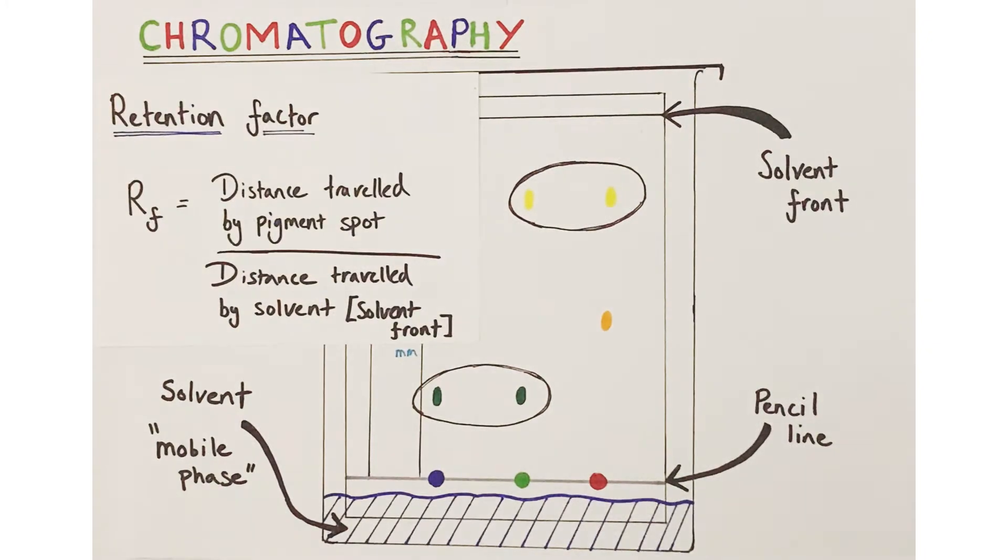In reality, sometimes it can be hard to tell if two pigments are actually at the same height as they can get quite smudged. Say, for example, my two yellow pigments here were actually quite smudged and spread out on the page. It could be hard to determine or distinguish if they were exactly at the same height. So a retention factor can be calculated to give a numerical value that can be compared to help with this. If two substances have the same RF value, then they are likely to be the same pigment.